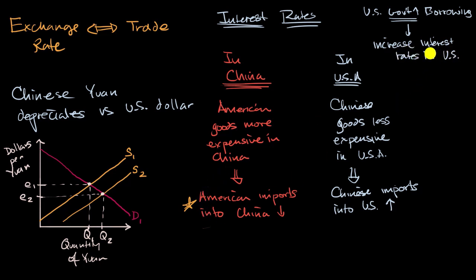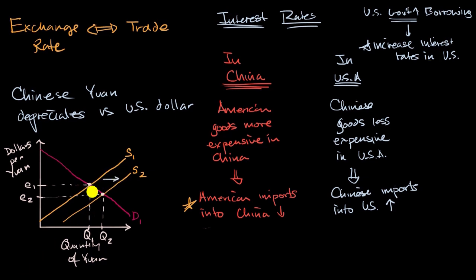If interest rates in the US increase, people in China might say, 'We're more interested in holding dollars, because we get more interest in a dollar bank account.' That could cause more Yuan holders to convert into US dollars, shifting the supply of Yuan to the right — which would depreciate the Chinese Yuan, exactly where we started this video. So US government borrowing, by increasing interest rates, can actually affect trade: it could make American goods less competitive in China and Chinese goods more competitive in the United States.